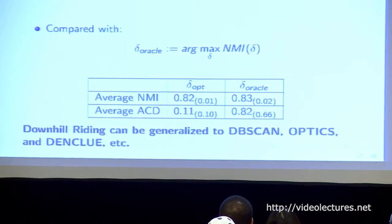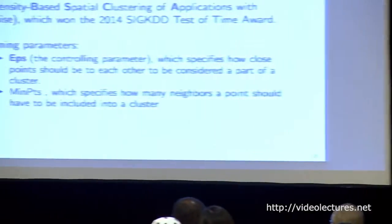The downhill riding procedure can not only help select tuning parameters in TRUST, but also in other clustering algorithms. Here is an application to DBSCAN. We try to help select a tuning parameter in DBSCAN and compare it with other selection methods, then apply DBSCAN with different selected tuning parameters on real benchmark data and test its accuracy. DBSCAN was proposed by Ester in 1996, winning the 2014 Test of Time Award at KDD.